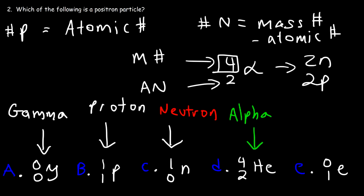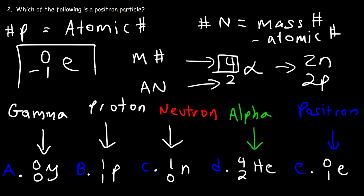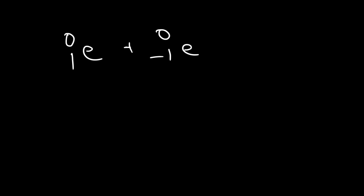Answer choice E is the positron particle. The positron is the antiparticle of an electron — an electron has a negative charge, whereas the positron has a positive charge but the same mass as an electron. It's simply the opposite of an electron. If a positron and an electron ever collide, this process is known as annihilation, and they will form two gamma particles.